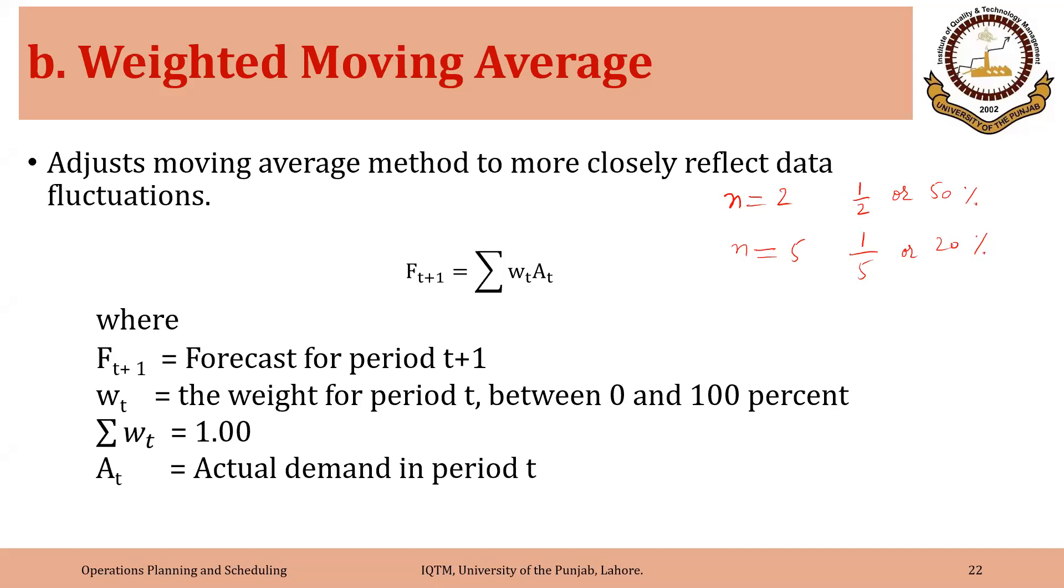And that was actually the reason that the smaller the n was, the more weightage we were giving to the most recent period. For example, for n equals 2, we were giving 50% weightage to the most recent period. And for n equals 5, we were giving 20% weight to the most recent period and 80% weight to the rest of the four periods.